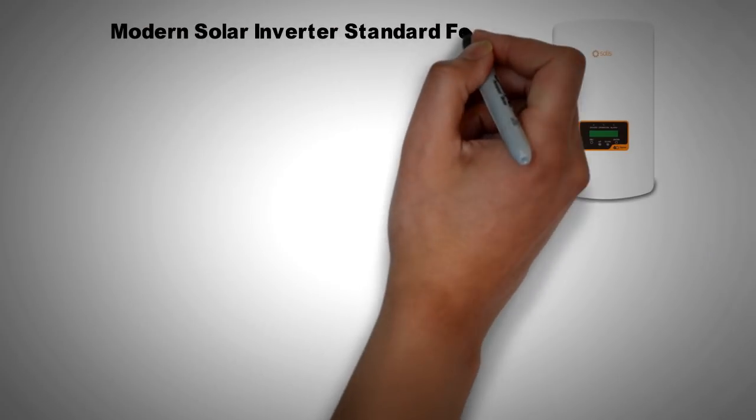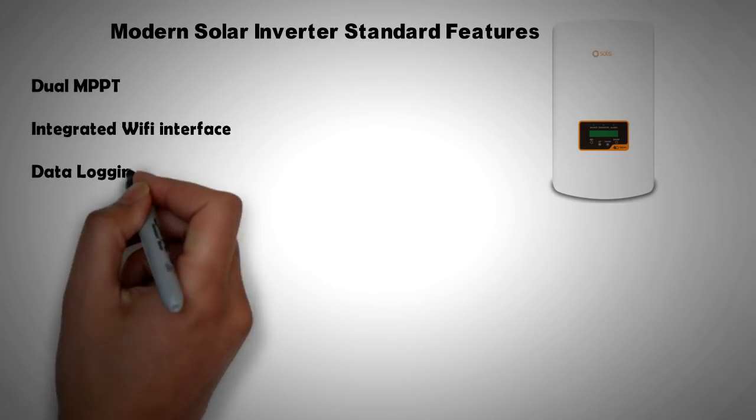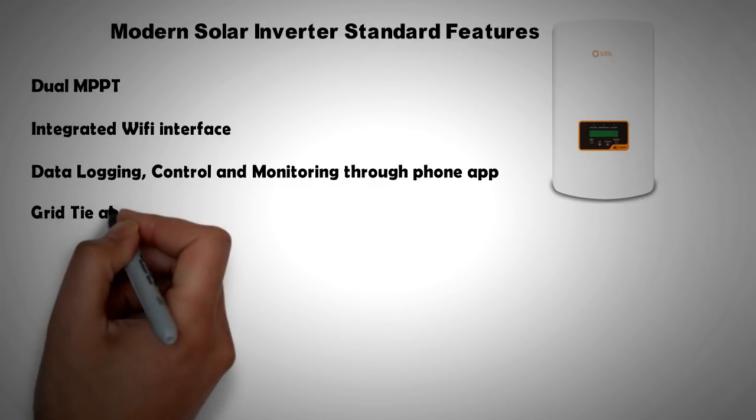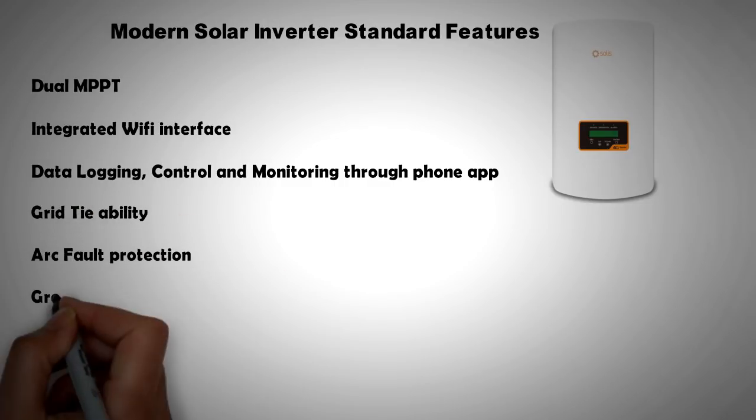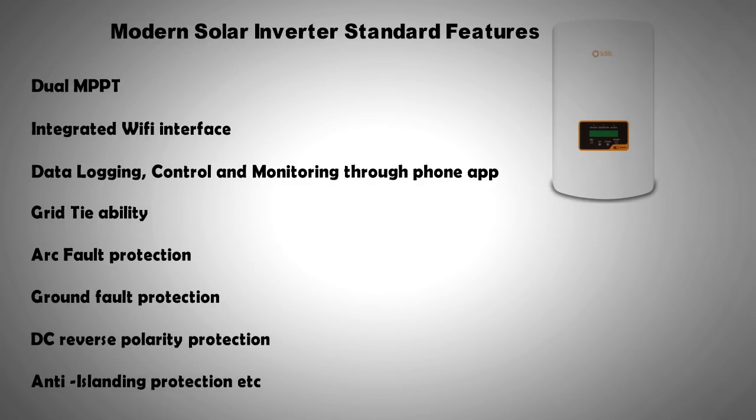If you look at quality inverters for domestic PV setup today, you might find the following features as standard: dual MPPT, integrated Wi-Fi interface, data logging control and monitoring through phone apps, grid tie-ability, arc fault protection, ground fault protection, DC reverse polarity protection, and anti-islanding protection.